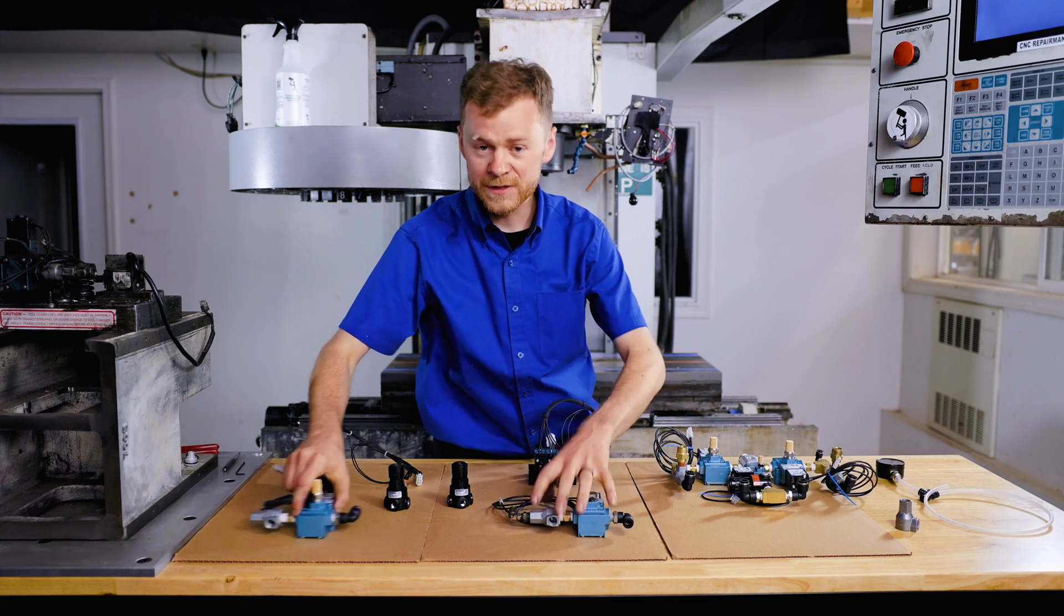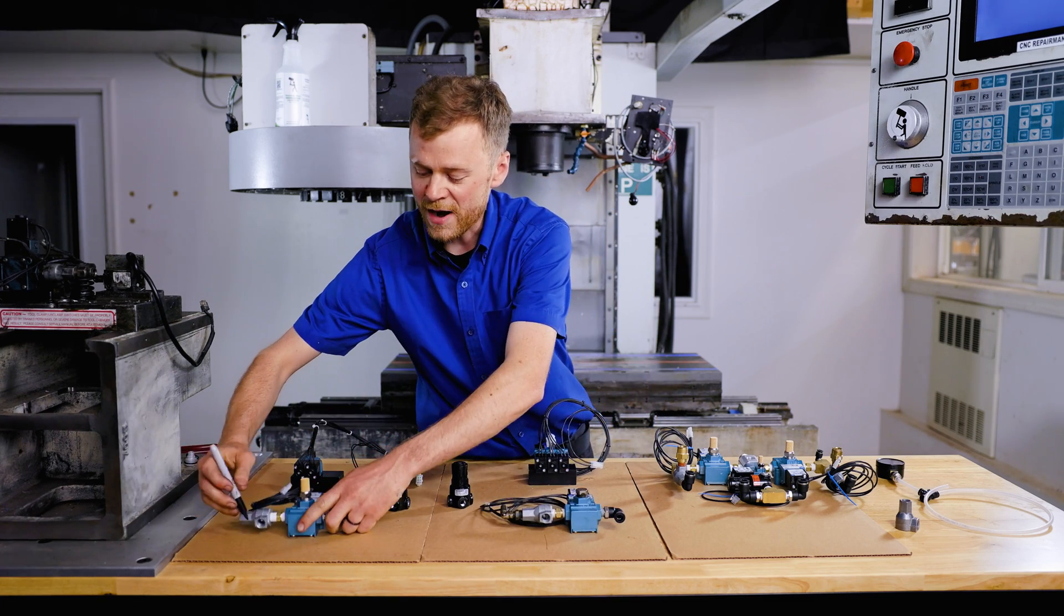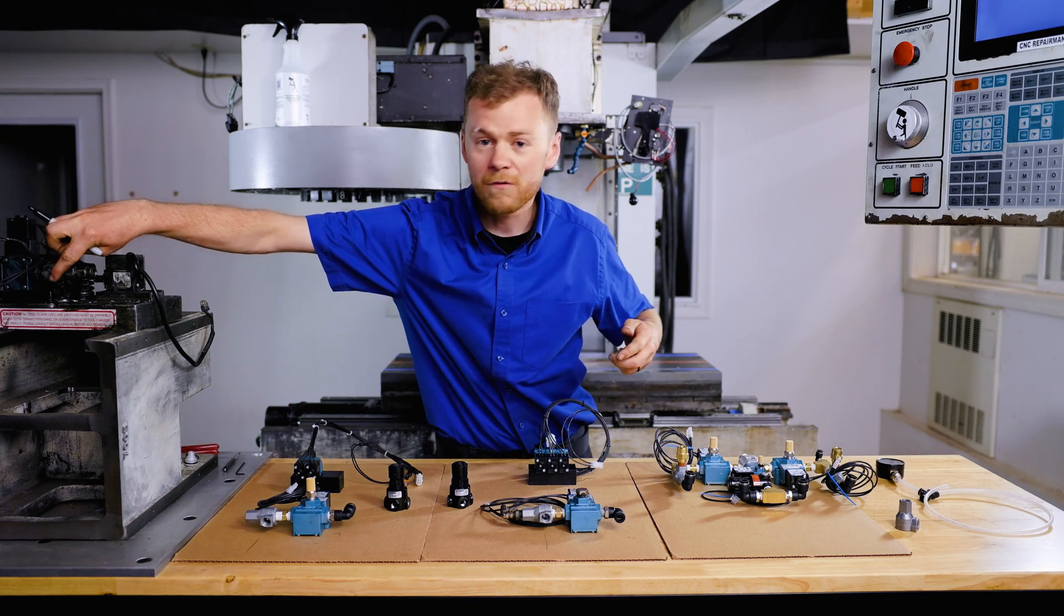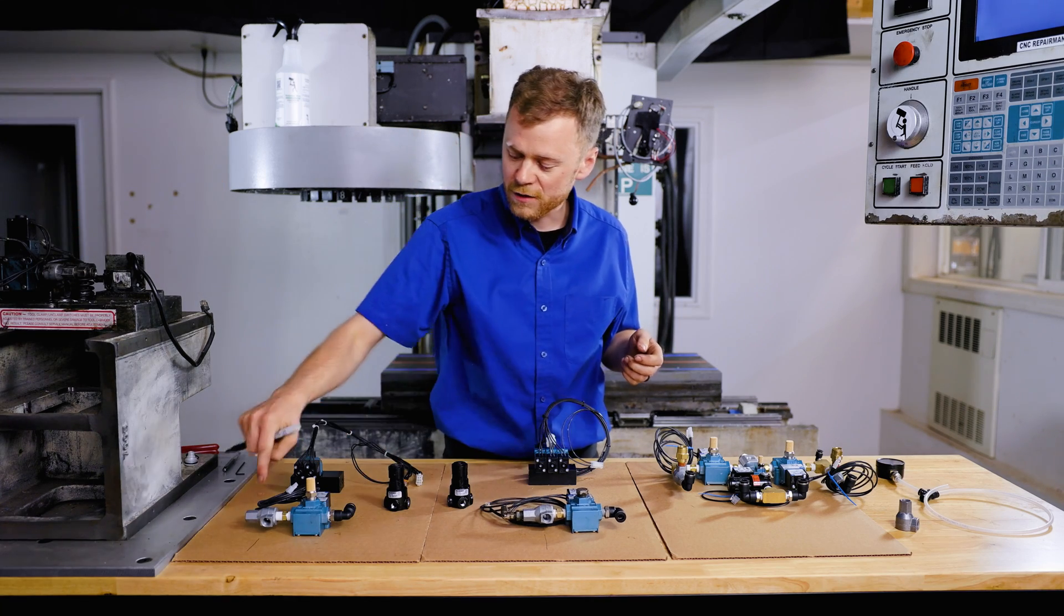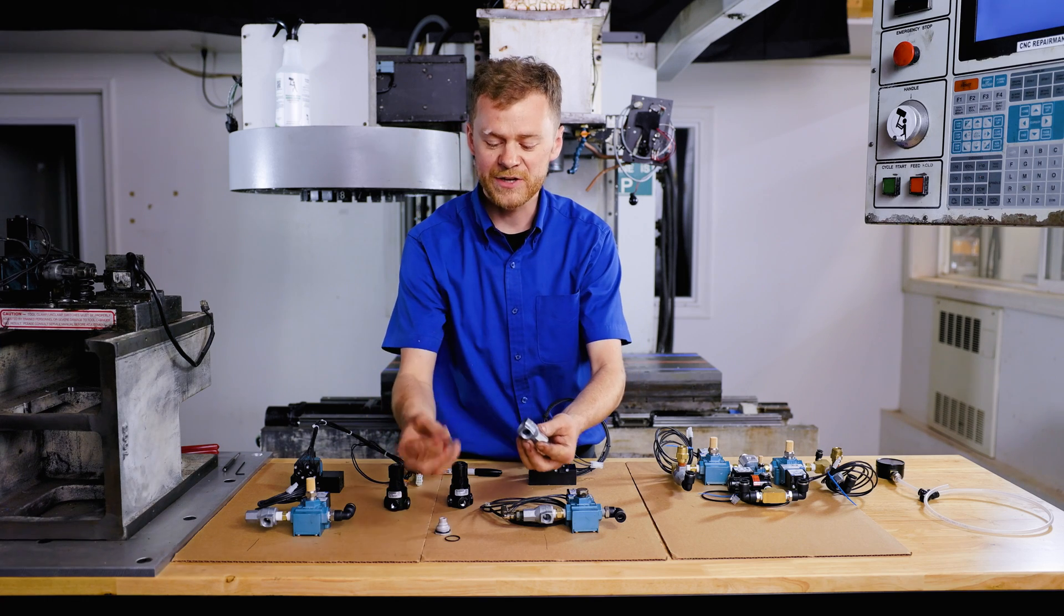This is your main tool release piston solenoid, and coming out of here goes right into the tool release piston, right down into there. This guy right here is a quick exhaust valve. Inside of the quick exhaust valve is basically a check valve and an orifice.